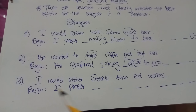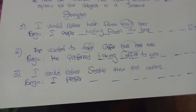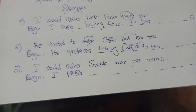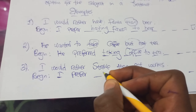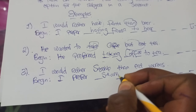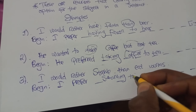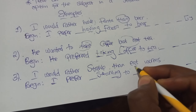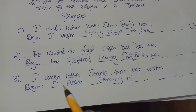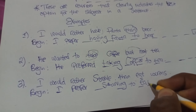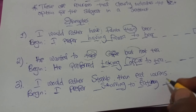Number three: 'I would rather starve than eat worms.' This doesn't mean the person is actually starving — it simply means that, given a chance to either starve or eat worms, the person would rather starve. So we say 'I prefer,' and 'starve' becomes 'starving.' Even 'eat' is not in its actual sense; it's just there to complete the sentence's meaning. So 'than' is replaced with 'to,' and 'eat' becomes 'eating,' giving us: 'I prefer starving to eating worms.'